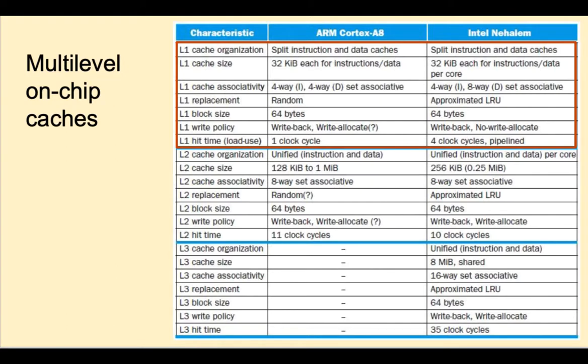The hit time for the ARM is one clock cycle compared to four clock cycles for the Intel chip. In the L2 cache, it's a unified instruction and data cache. The L2 hit time is 11 clock cycles in the A8 compared to 10 for the Intel chip. The Intel chip has an L3 cache and it takes 35 clock cycles to access.